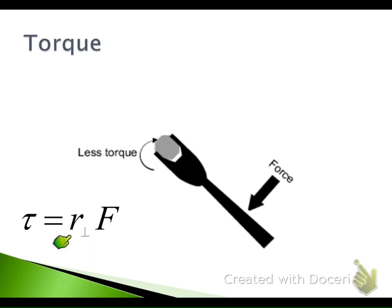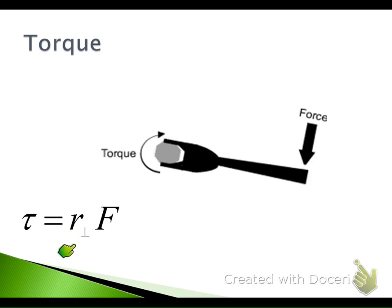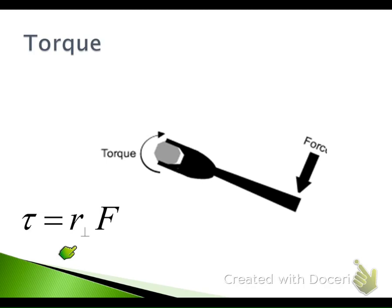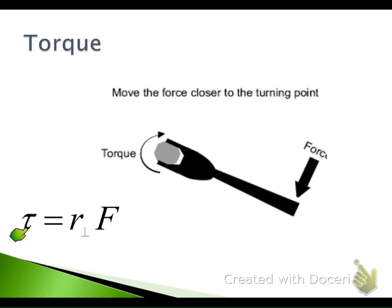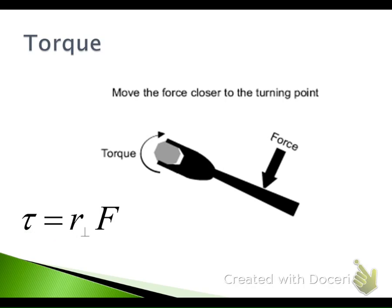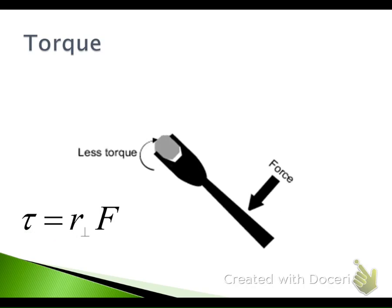As you decrease this R-value — if you decrease the radius — torque goes down. The math proves it too. So as you increase the radius, your torque will go up. The farther away you are from your axis point, the more effective that rotation will be.